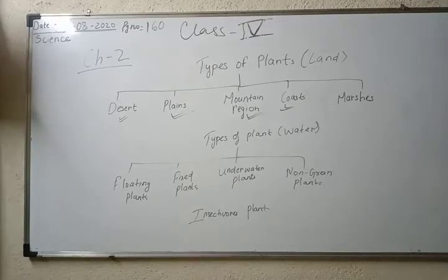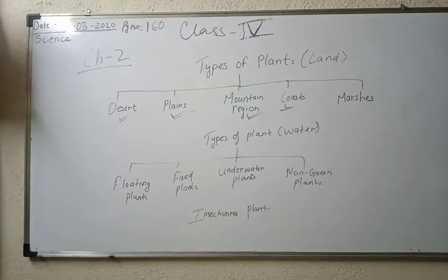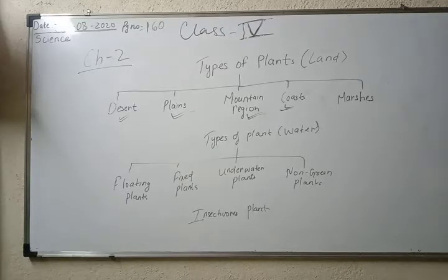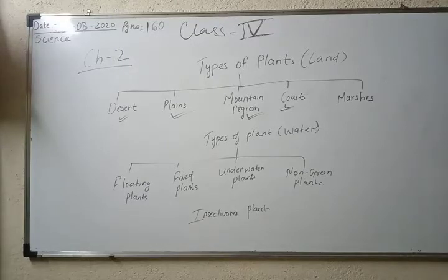In this type of waterlogged soil, air is not allowed to pass through. So the roots of the plants do not get enough air to breathe. The plants here need adaptation to get air. The roots of the plants in marshes grow out of the soil and take in oxygen directly from the air. These roots are called breathing roots.